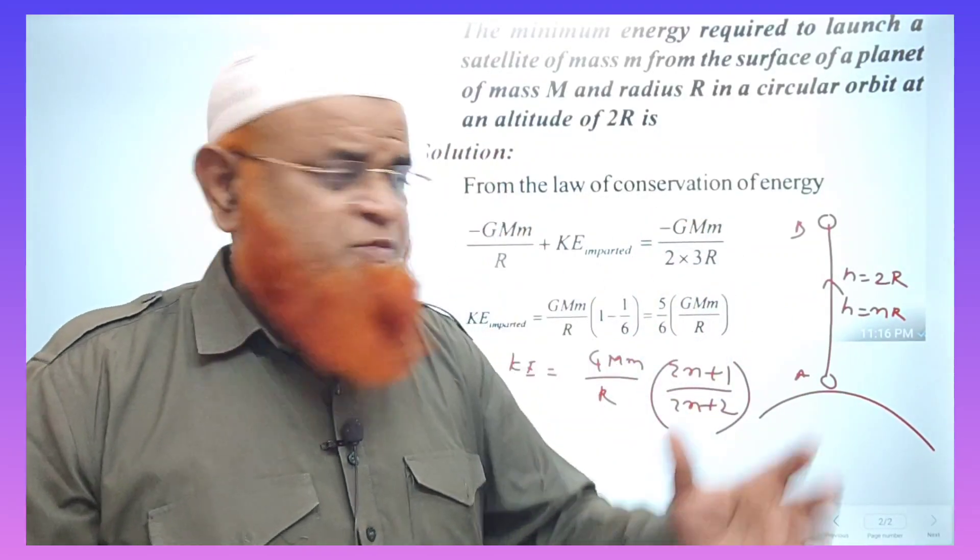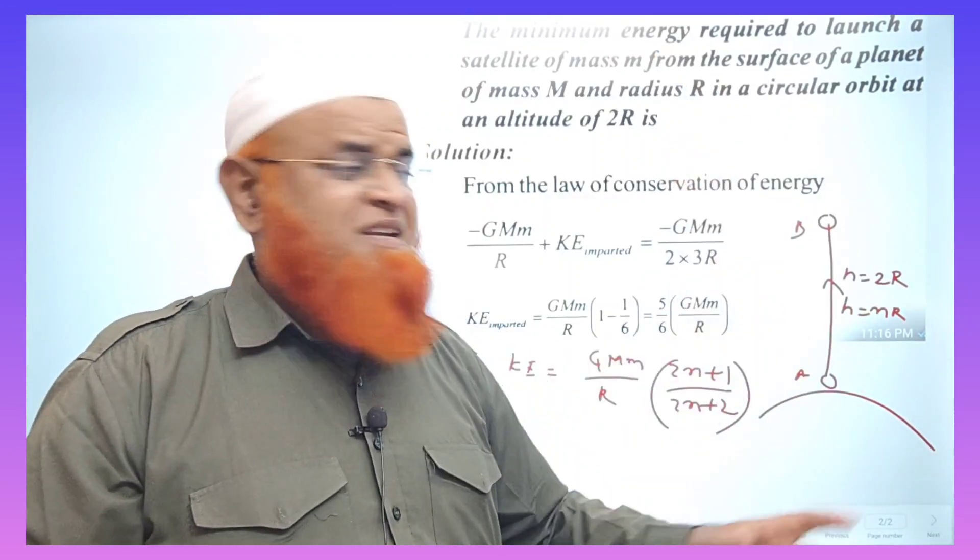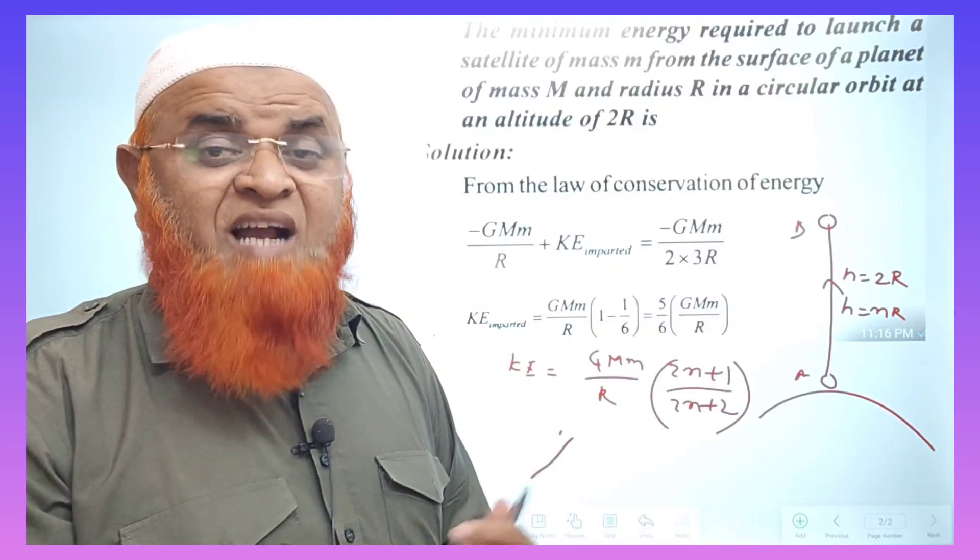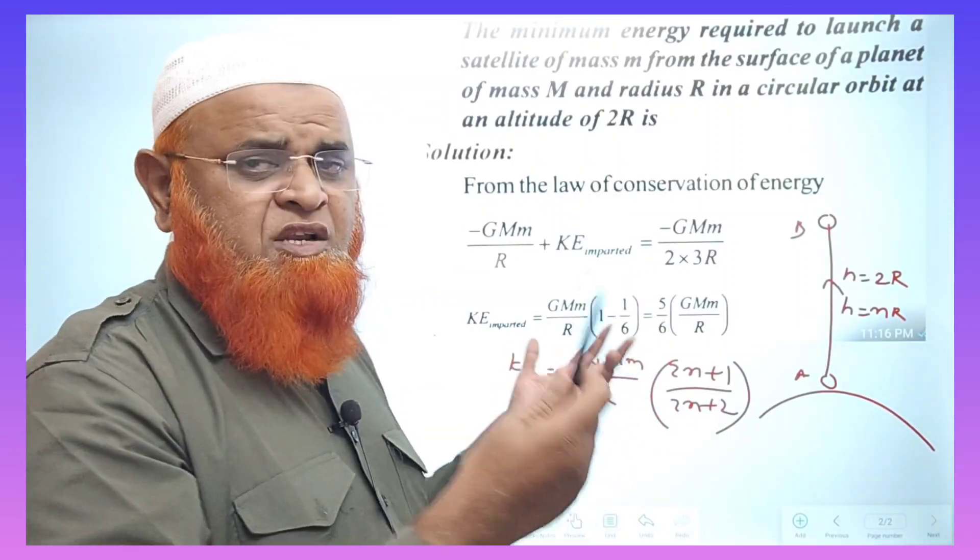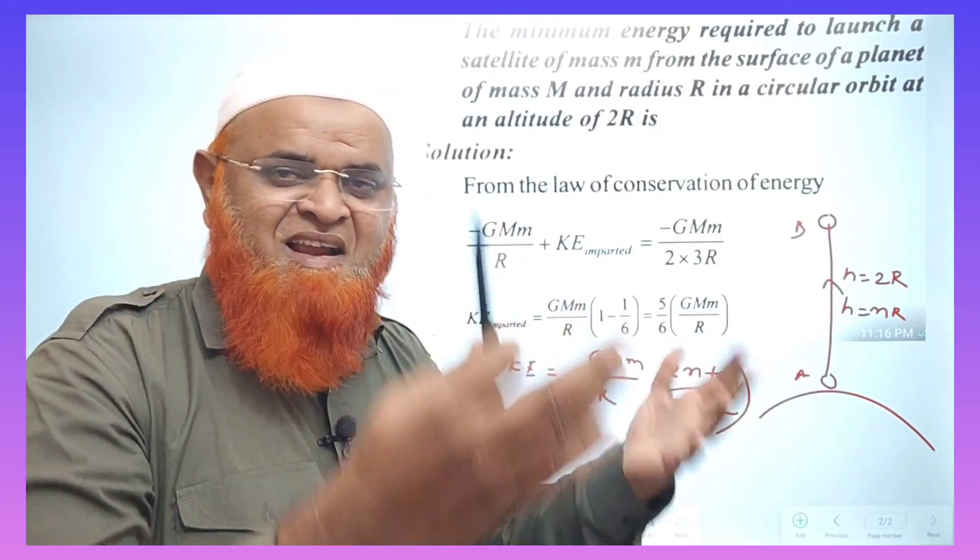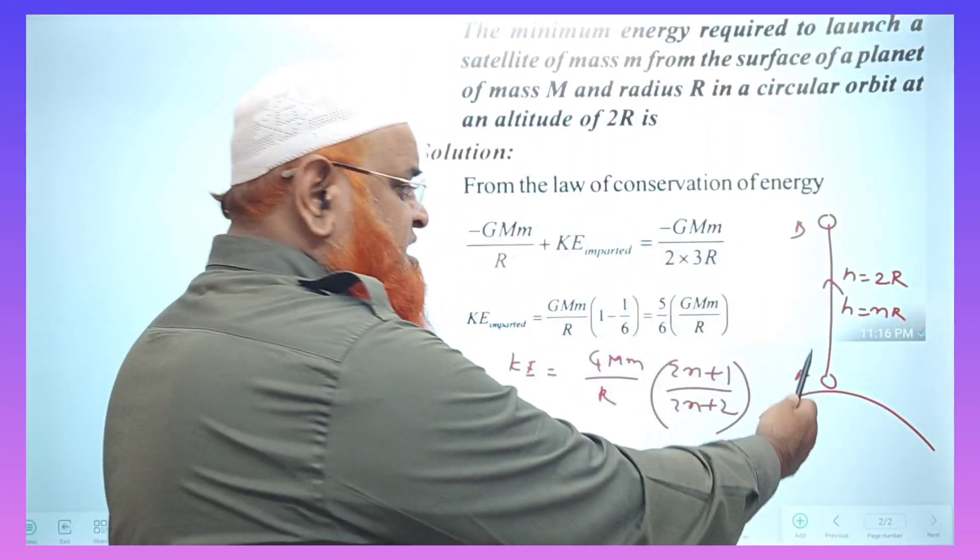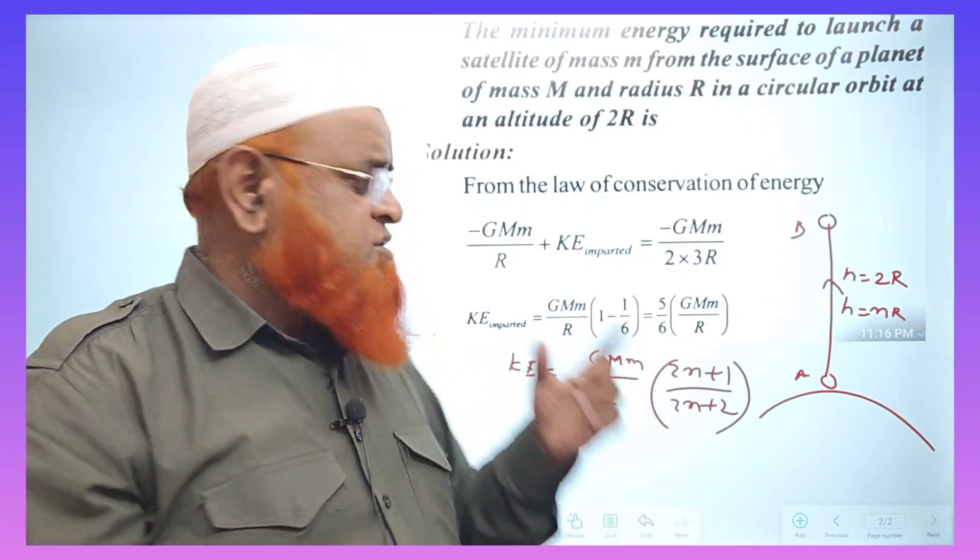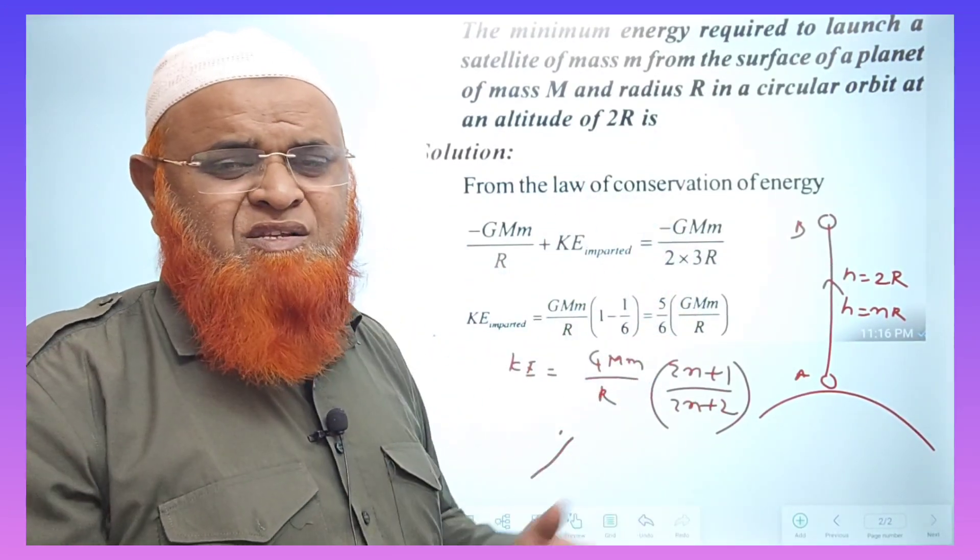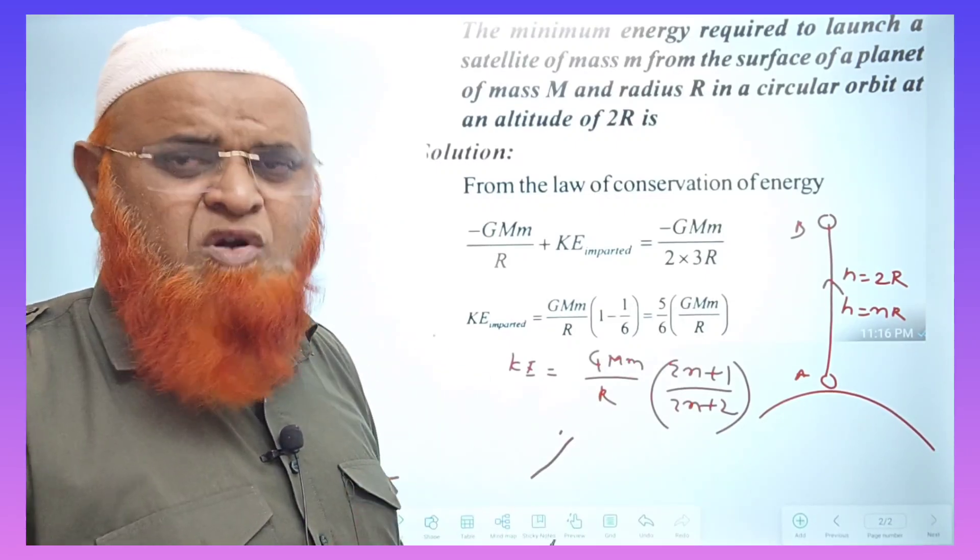The question is, when a body is projected from the surface of the earth to a height equal to double times the radius, then what is going to be the kinetic energy of projection? For that, you all know that you will take two points. Since kinetic energy at A equals kinetic energy at B and total energy at A equals total energy at B. So at A, potential energy, kinetic energy at B—all these nuisance and nonsense conservation of energy is not at all required here.